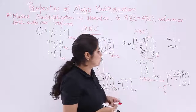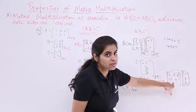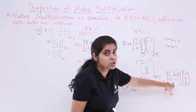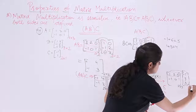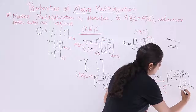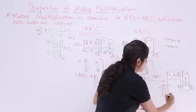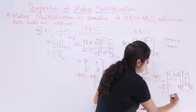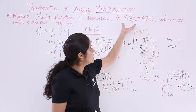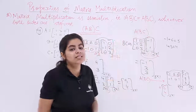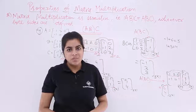Both results are equal: (AB)C = [5, 4] and A(BC) = [5, 4]. The order of the resultant matrix is 2×1 in both cases. Hence, it is verified that the property of associativity in matrix multiplication holds true.